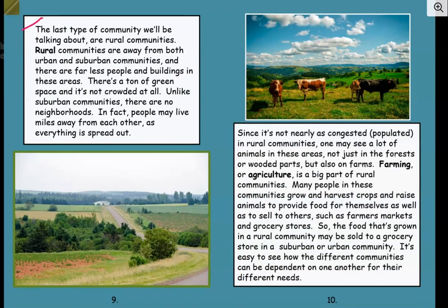The last type of community we'll talk about is rural communities. Rural communities are away from both urban and suburban communities, and there are far fewer people and buildings in these areas. There's a ton of green space and it's not crowded at all. Unlike suburban communities, there are no neighborhoods — many people may live miles away from each other. I see one house way back in the distance, surrounded by trees and green space. There is a paved road, but rural communities also have a lot of dirt roads, and sometimes you need a big truck to get down those dirt roads. You see a lot more tractors in rural communities than in suburban or urban areas.